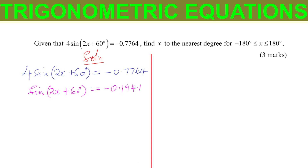After doing that, we take the sine inverse of both sides. We want to get rid of the sine on the left-hand side, so we apply the sine inverse. The sine inverse of sine of (2x + 60°) leaves us with 2x + 60.